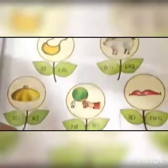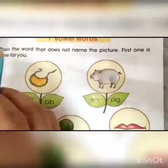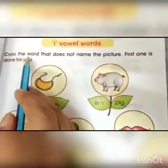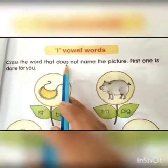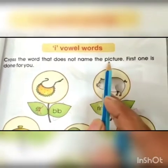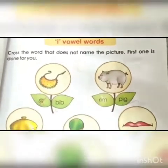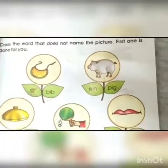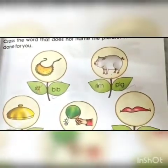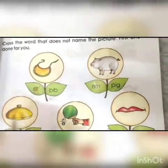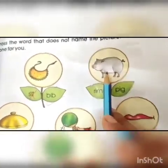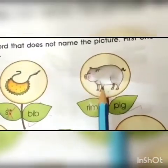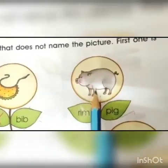Now you will close the word that does not name the picture. Let's start. Look at the picture in the circle. Which picture is this? This is a pig.